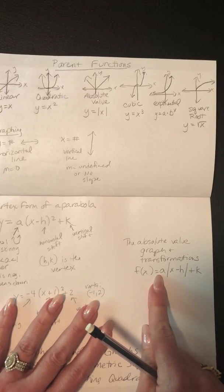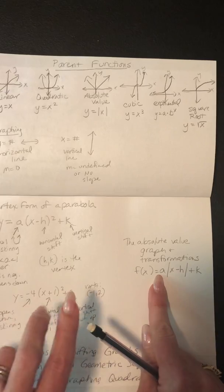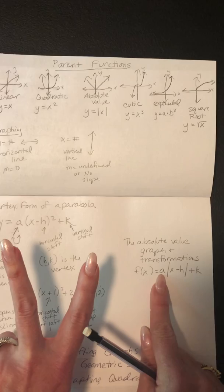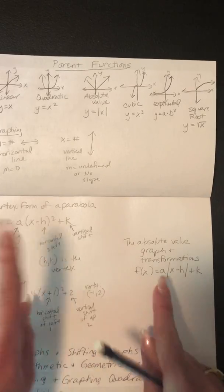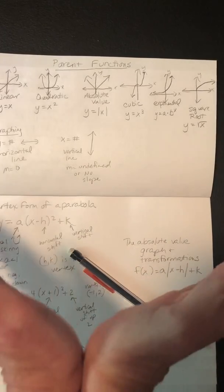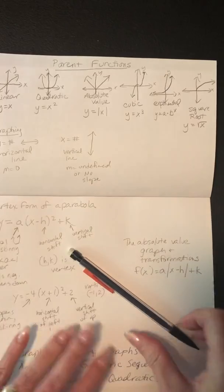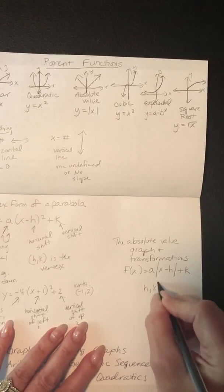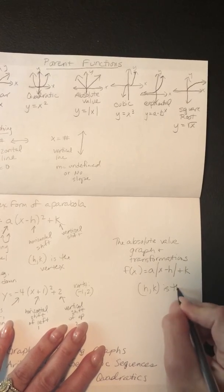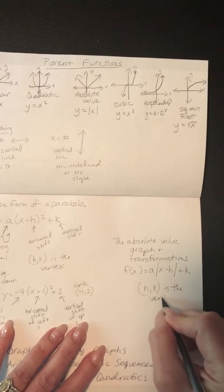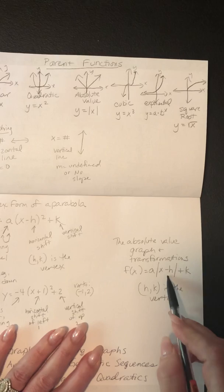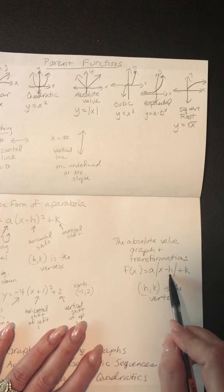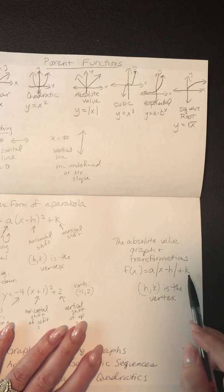The a value tells you whether it opens up or down. It also tells you whether the slope is steep, meaning the slope is greater than 1, or if the slope is kind of flat, which would mean between 0 and 1. And then again, h comma k is the vertex of that v looking graph, where this again is the right or left shift and this is the up or down shift.